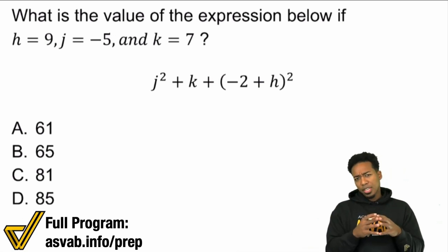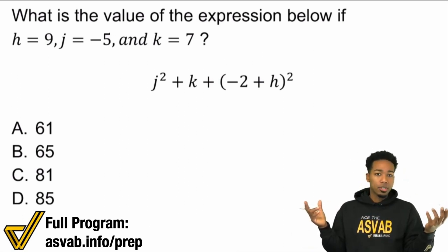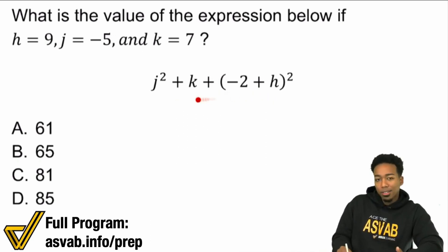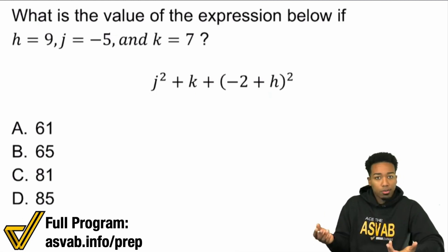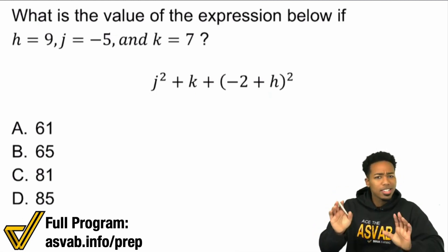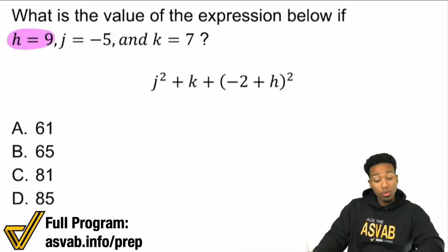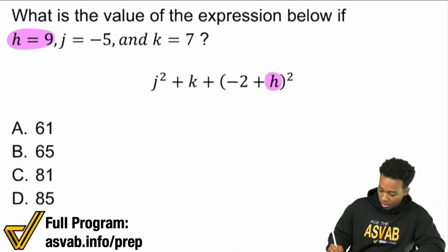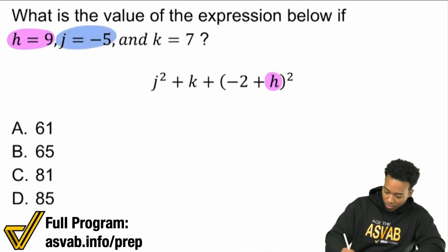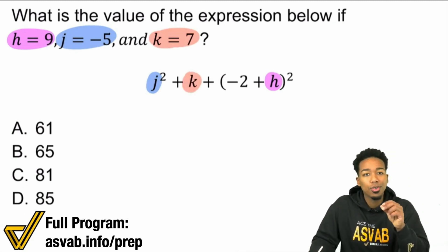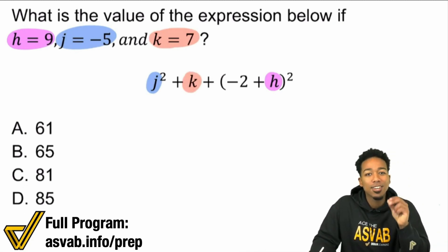Here's how we do this — it's just like order of operations. The only difference is you can't find the value if you don't know what these variables are. So the first step, nice and easy, is just to plug in those values. You see that h is 9, j is negative 5, and k equals 7 — right there.